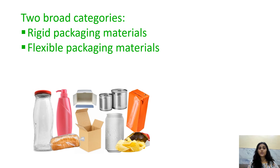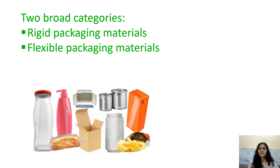There are two broad categories of packaging: rigid packaging materials and flexible packaging materials. Rigid packaging uses strong and durable materials designed to avoid bending, curving, snapping, or breaking. Flexible packaging materials are those whose shape can be readily changed during or after use; they can bend easily and bundle together to save space.